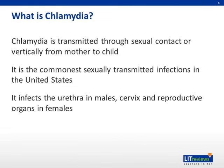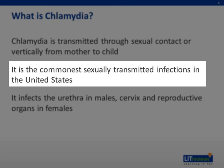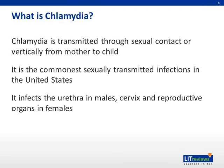Chlamydia is an infection that is transmitted sexually or via mother to child during childbirth. It is the most common cause of sexually transmitted infections in the United States. Risk factors identified for acquisition of this infection include adolescence, new or multiple sex partners, history of STI, presence of another STI, oral contraceptive use, and lack of barrier contraception.